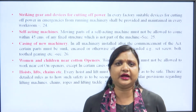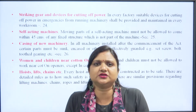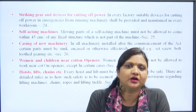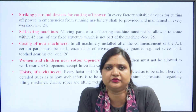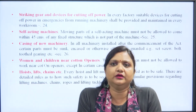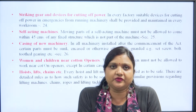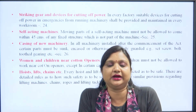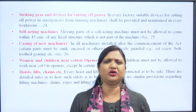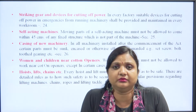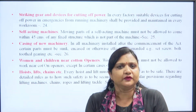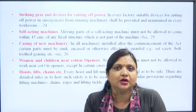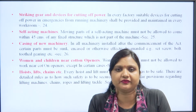The next provision is striking gear and device for cutting off power. In every factory, suitable devices for cutting off power in an emergency from running machinery shall be provided and maintained in every workroom. While operating machinery or equipment, an individual may be exposed to some sort of accident, so there should be a provision to cut off power so that the continuous running of machinery can be stopped and that individual may not be part of a hazardous incident. Section 25 states that moving parts of a self-acting machine must not be allowed to come within 45 centimetres of any fixed structure which is not a part of the machine.